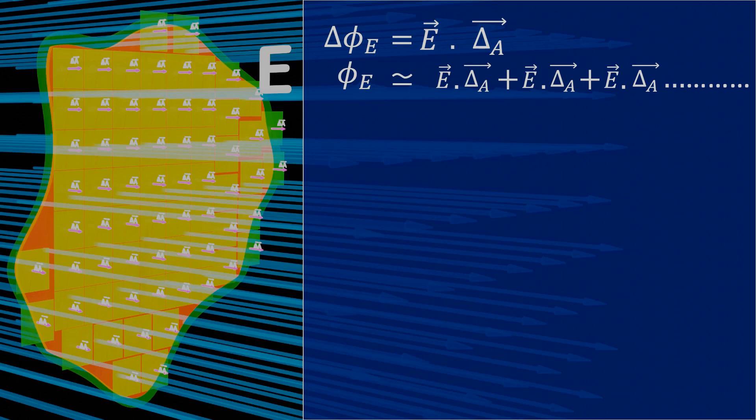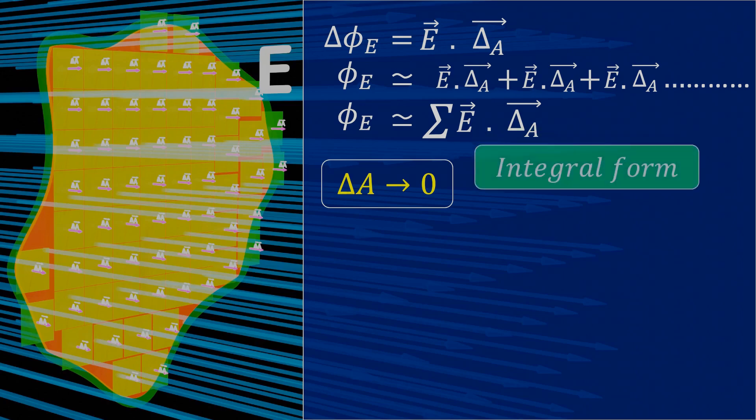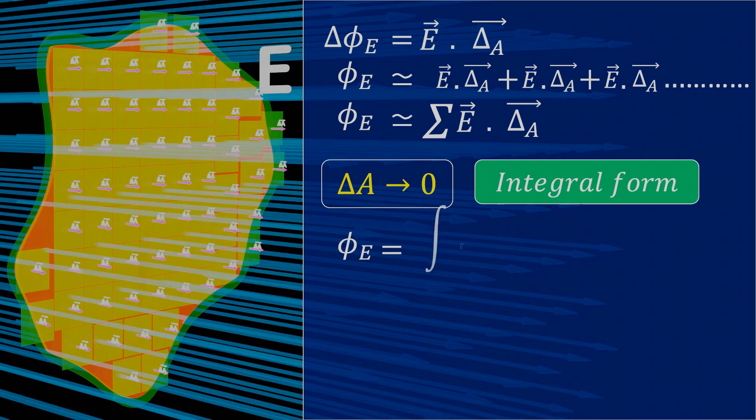We can finally express electric flux φ_E approximately equal to summation of dot product of E and del A. To find the exact value, we need to consider del A tending to zero, and then use the integral to obtain the exact value. In integral form, the electric flux φ_E is equal to integral of E dot dA, which is equivalent to integral of E dA cos theta.